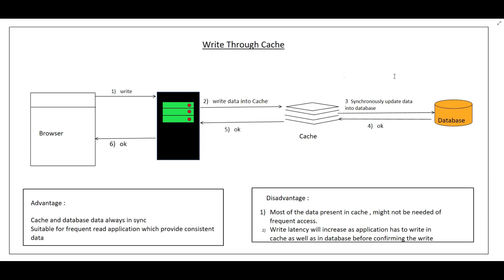For write operations, the first strategy is Write Through Cache. A write comes to the application, which writes to the cache first, and then synchronously writes the data to the database. The application waits for confirmation from the database and from the cache before returning a successful write confirmation to the browser. Both the cache and database are updated at the same time. The benefit is that the cache and database will always be in sync, making it suitable for read-heavy applications that require consistent data.